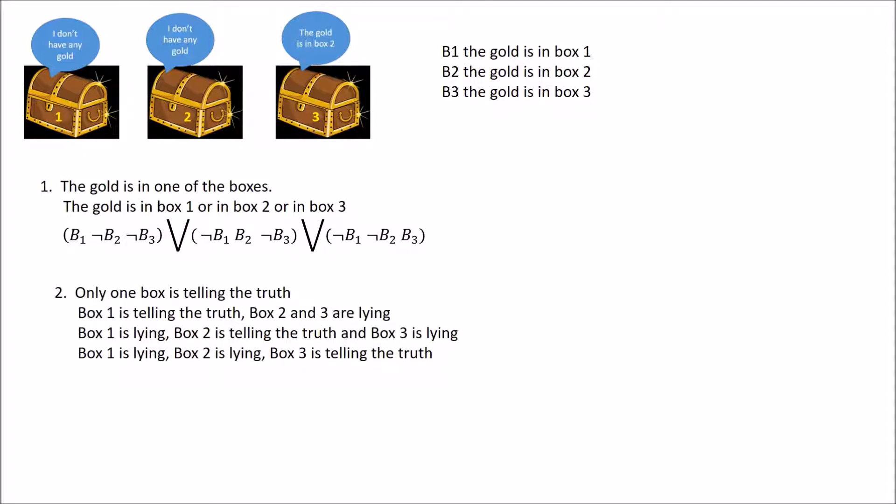Now for the second statement — only one box is telling the truth. There are three possibilities: box one is truthful and the other two lie; box two is truthful and the others lie; or box three is truthful and the others lie. We separate these three possibilities with OR using V symbols.